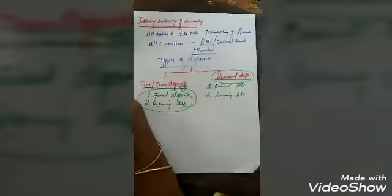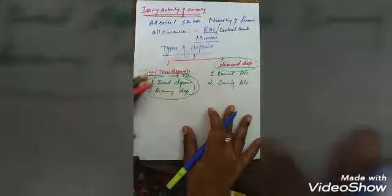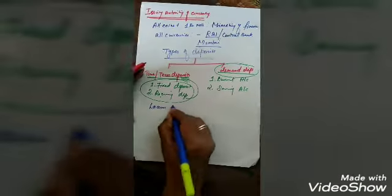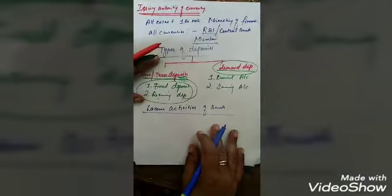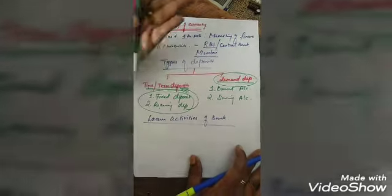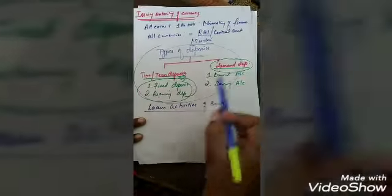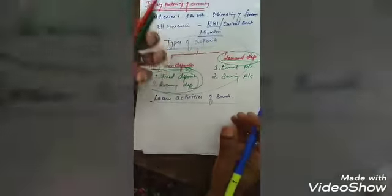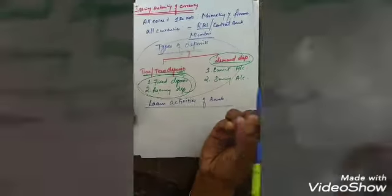Current account is favorable for business people and industrial purposes, while savings account is favorable for monthly income people. Next is the loan activities of the banks. Before going to loan activities, we have to see the functions of commercial banks. On one side they accept deposits from the public — time deposits and demand deposits — and on the other side the same amount is given as loans and advances to needy people.